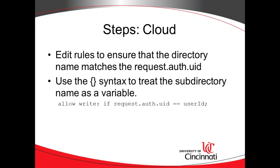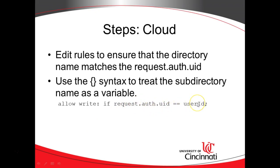We can use a little parameter magic to pull that path name out of the path, and then we can put together a rule like so where we say allow write if request.auth.uid equals the user ID obtained from the path. So without further ado, let's get started.